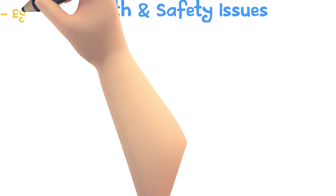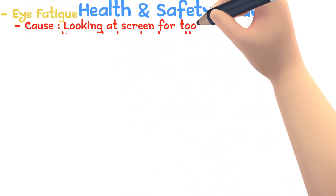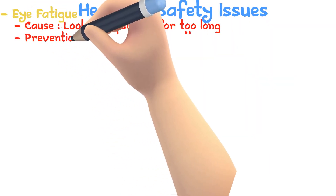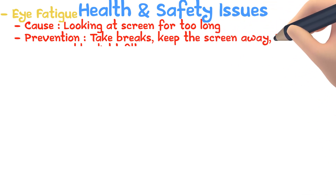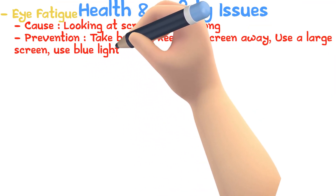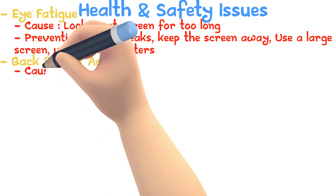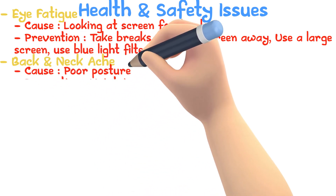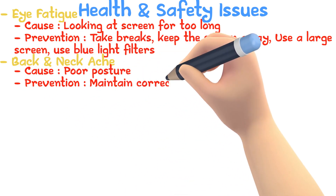Health and safety issues: Eye fatigue — cause: looking at a screen for too long; prevention: take breaks, keep the screen away, use a large screen, or use blue light filters. Back and neck ache — cause: poor posture; prevention: maintain correct posture.